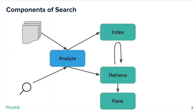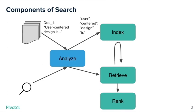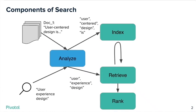Here is what I would consider the big picture view of how search works. You start with some documents or records. A document might include words like 'user-centered design.' You go through an analysis step where you split it up into separate words, do some other transformations, and then you index it. At query time, somebody wants to know something — they might have a query like 'user experience design.' It will go through a similar analysis step, splitting it into words, and then go through retrieval, where it uses that index to very quickly retrieve a set of documents that will potentially be of interest.